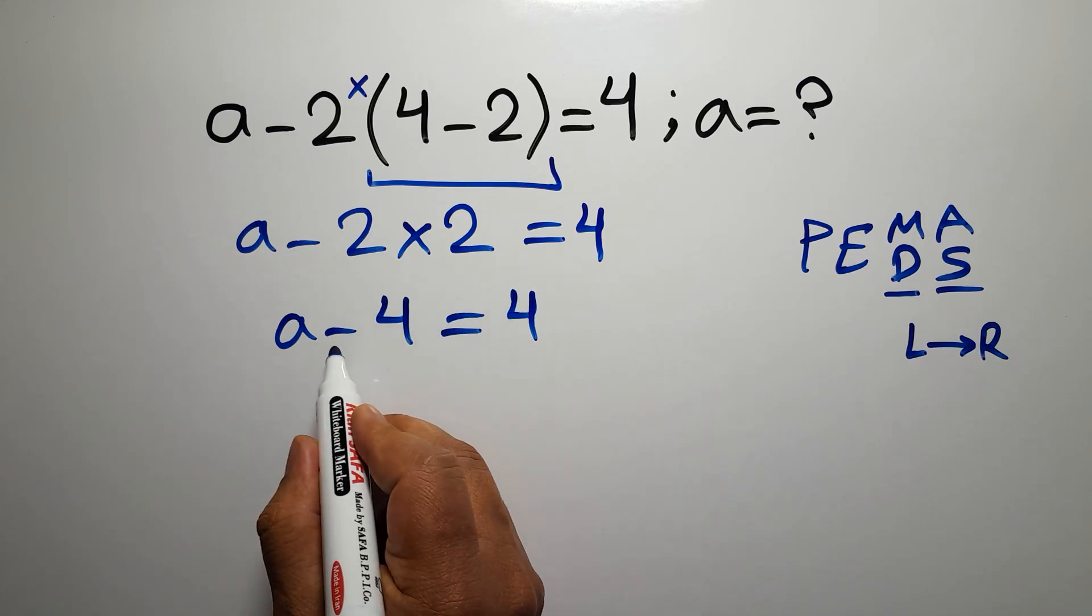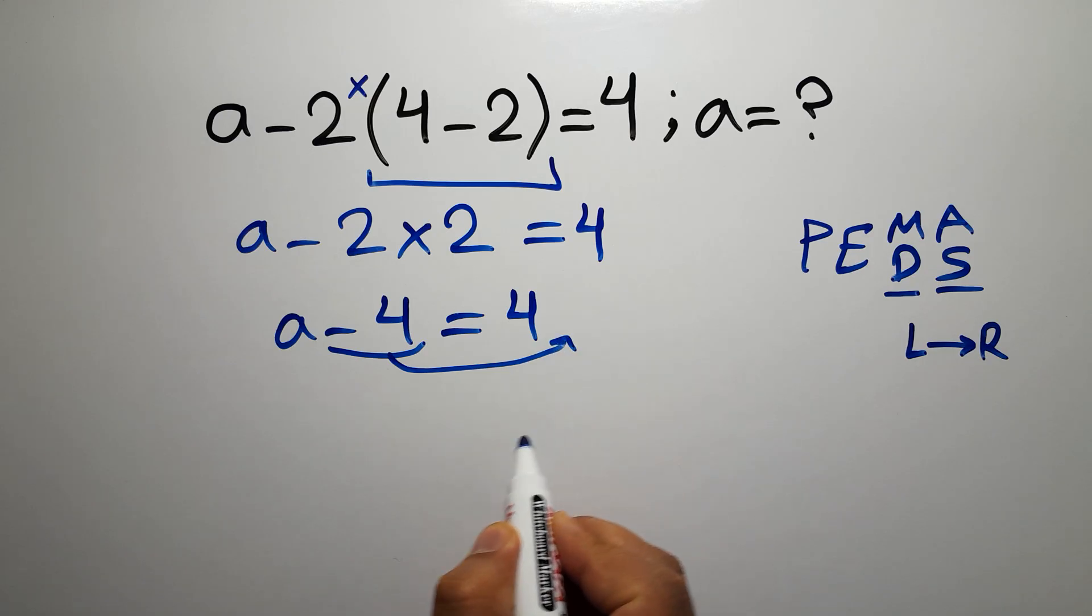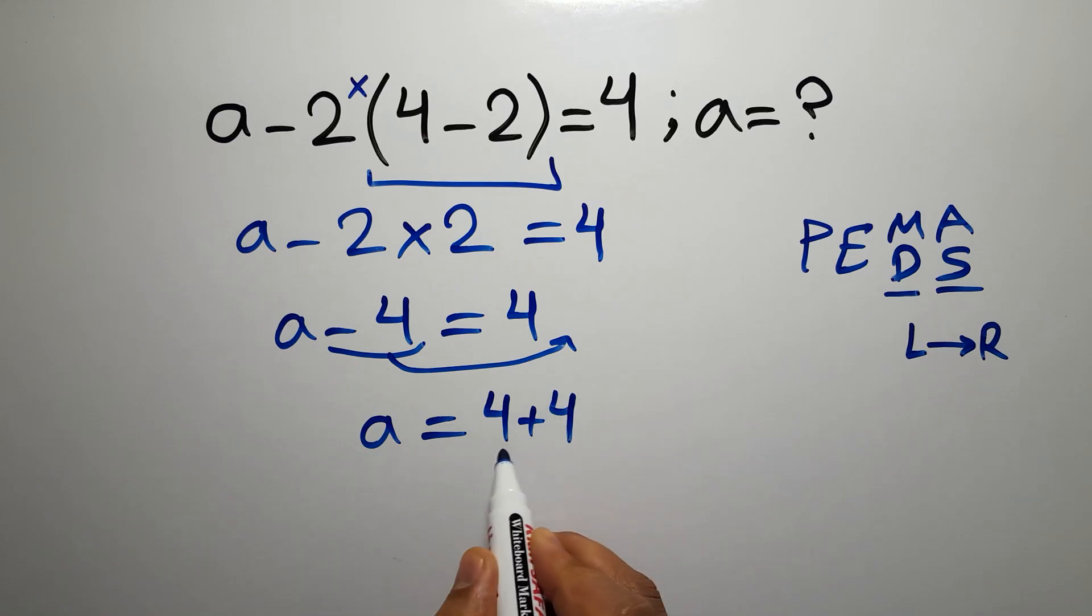Now, let's move this minus 4 to the right hand side. Therefore, a will be equal to 4 plus 4. And 4 plus 4 is just 8.